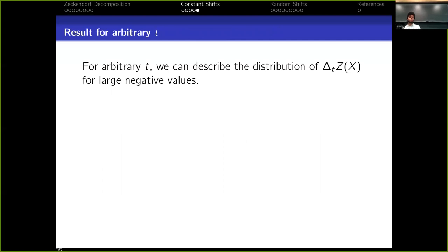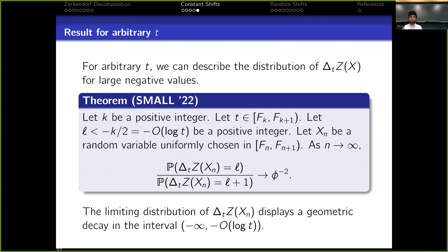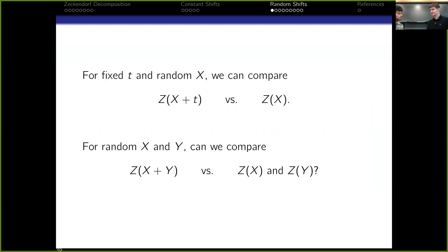For arbitrary t, while we cannot describe the distribution exactly, we can describe the distribution for large enough values. And what happens in large enough values is that the same tail that we saw before, so after some point, there was a geometric series. It also happens here at a cutoff of around log t, negative log t. Okay, so for fixed t and random x, we can compare pretty well z of x plus t versus z of x. For random x and y, how can we compare z of x plus y and z of x, z of y? That's what Jack's going to talk today. All right. Thank you, Zeus.